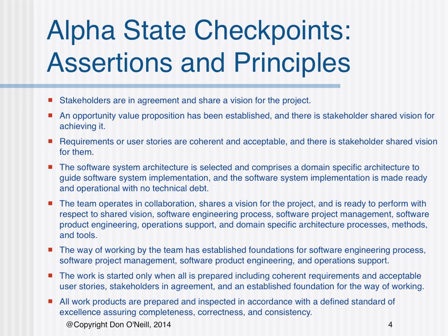Number four, the software system architecture is selected and comprises a domain-specific architecture to guide software system implementation, and the software system implementation is made ready and operational with no technical debt. Number five, the team operates in collaboration, shares a vision for the project, and is ready to perform with respect to shared vision, software engineering process, software project management, software product engineering, operation support, and domain-specific architecture processes, methods, and tools.